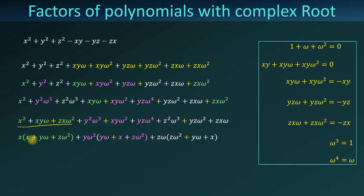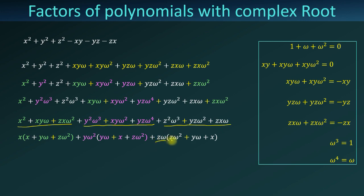Now we can take common factor x from the first group and we get x times (x plus y·omega plus z·omega squared). From the second group we take y·omega squared as common factor and get y·omega squared times (y·omega plus x plus z·omega squared). From the third group we take z·omega and are left with z·omega times (z·omega squared plus y·omega plus x).